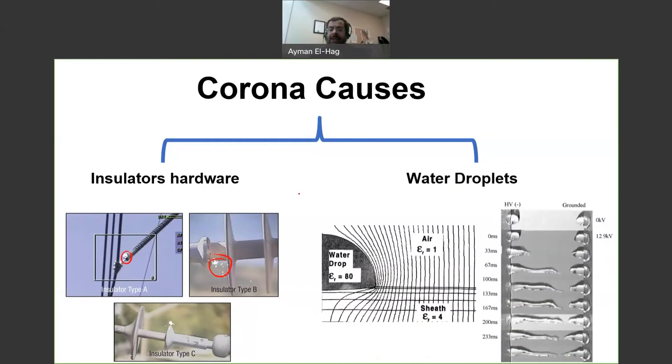Also, wetting on the surface can also cause Corona. And here I'd like to make a very clear difference between surface Corona and dryband arcing. In dryband arcing we have full wetting on the surface. But here, because of the difference in the dielectric constant between the water droplet which has an 80 dielectric constant,